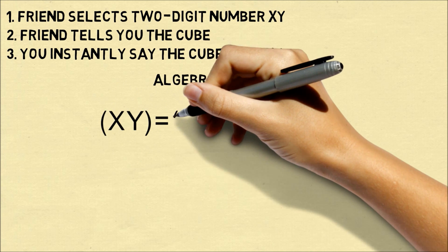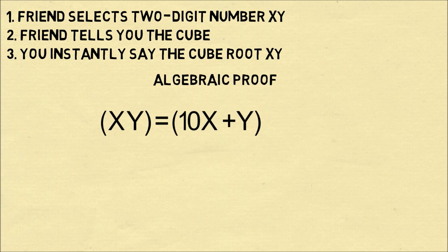So here's how it works. Any two-digit number xy is written as 10x plus y, because the x is in the tens place.